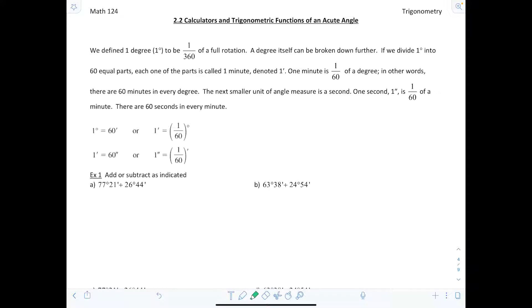Previously we defined one degree to be 1/360th of a full rotation, and we can break this degree down even further. If we divide one degree into 60 equal parts, then each of those little parts is called one minute and we denote that with a little tick mark.